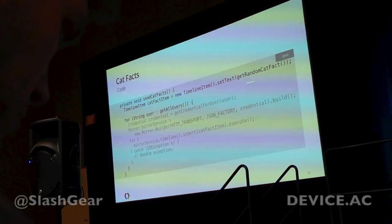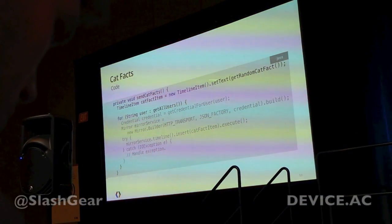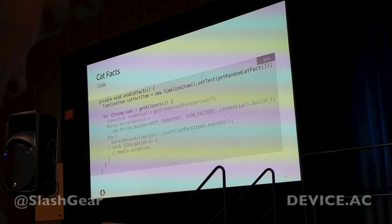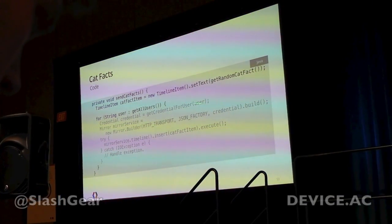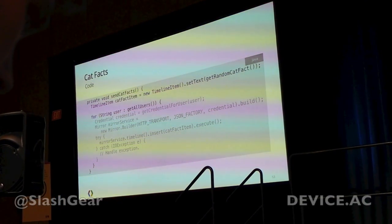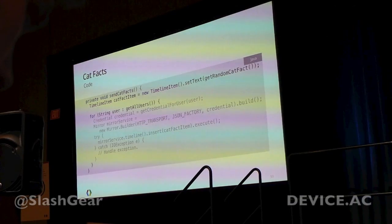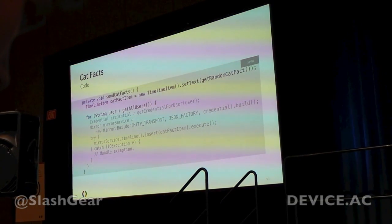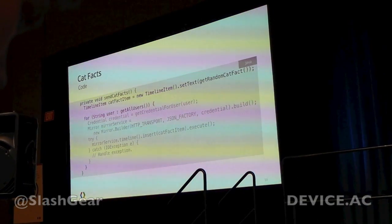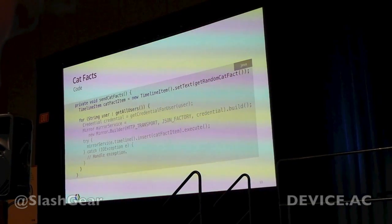Let's take a look at the code. It's very simple. We start by getting a random catfact — in this case we're only setting the text, but in your glassware you might want to use HTML to add your own branding. Then we are getting a random catfact, but you should get push notifications from the news provider you're getting information from. Then you go through all of your users in your database.